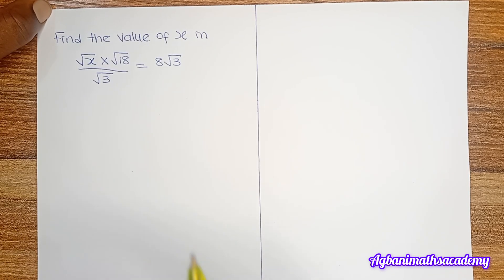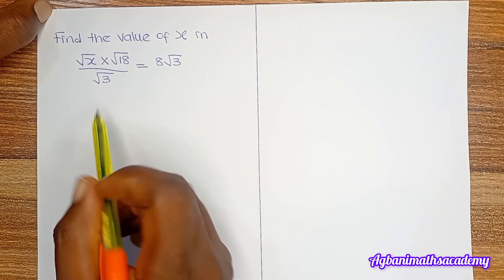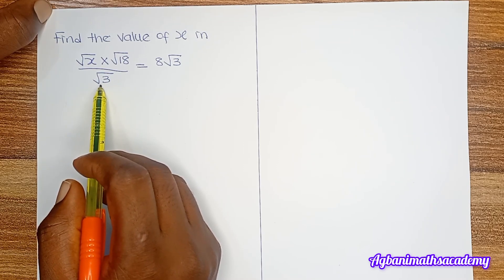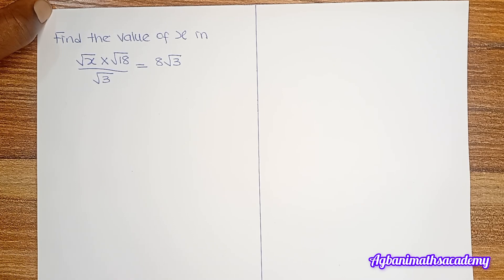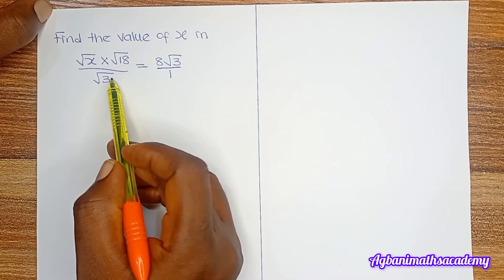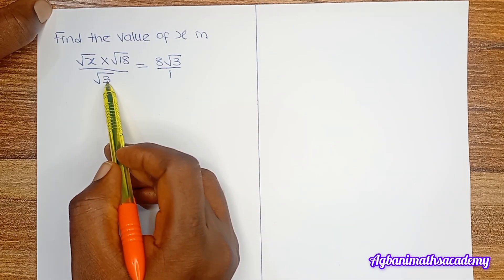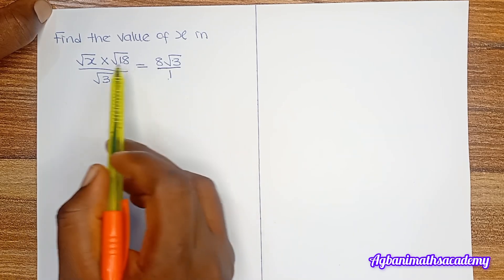In order to solve this equation, the first thing we are going to do is cross multiply in order to eliminate the denominator. Whenever an equation contains a denominator, you either cross multiply or multiply both sides by the denominator. So this denominator multiplies this numerator, and this numerator multiplies this denominator.